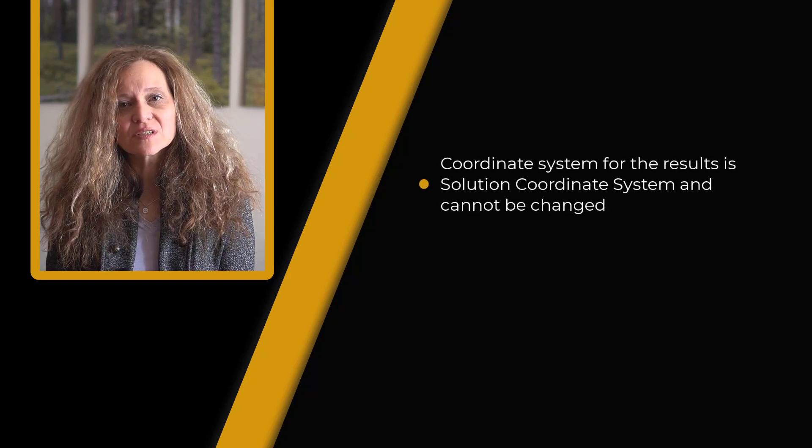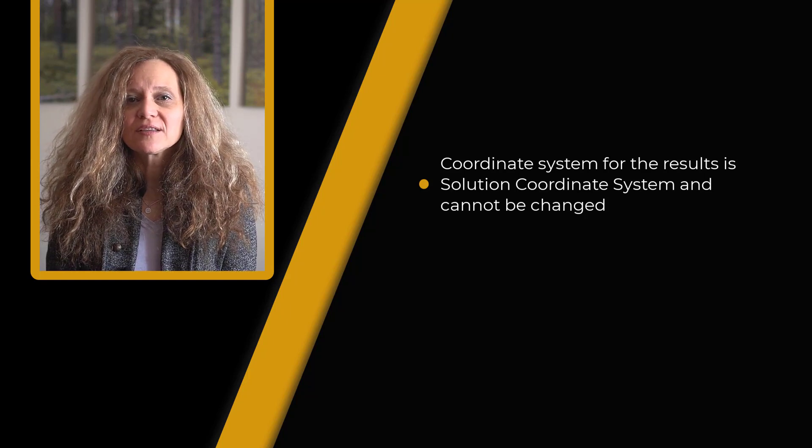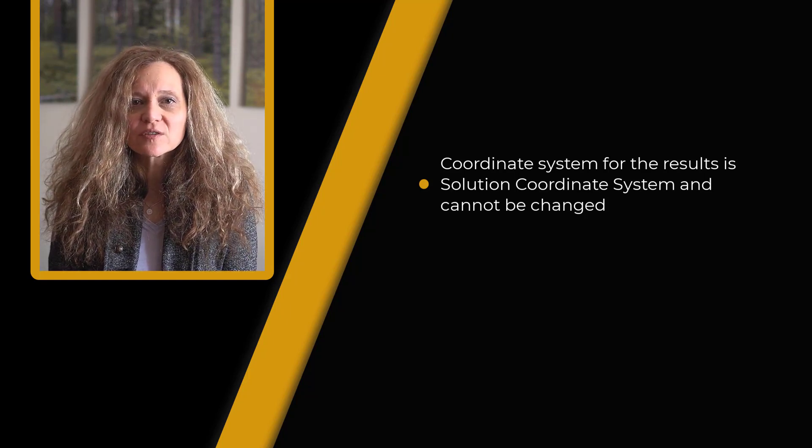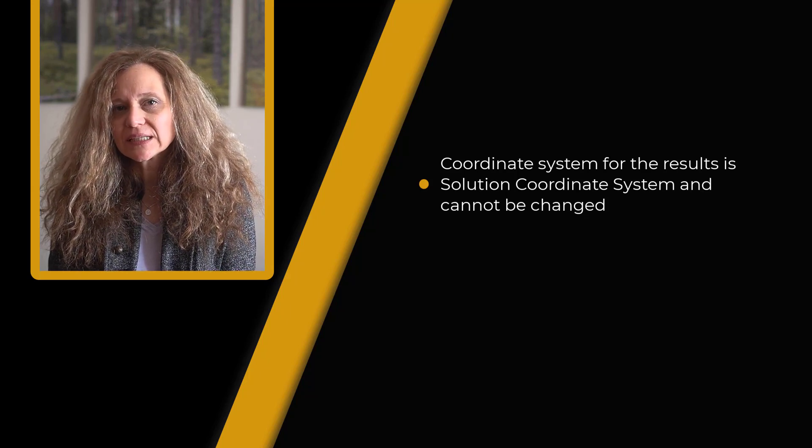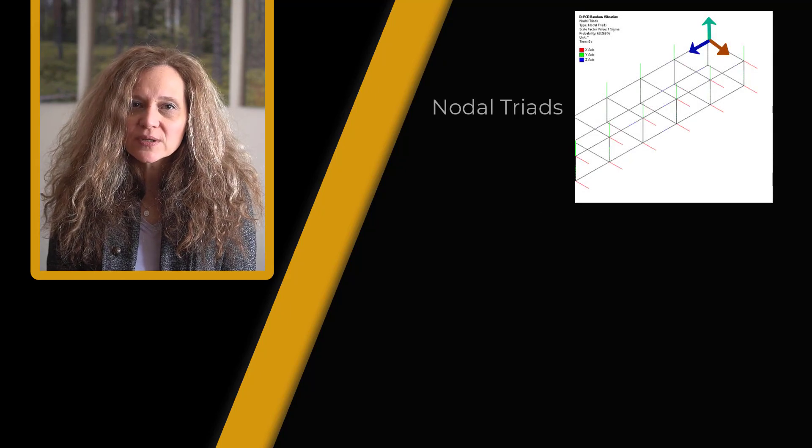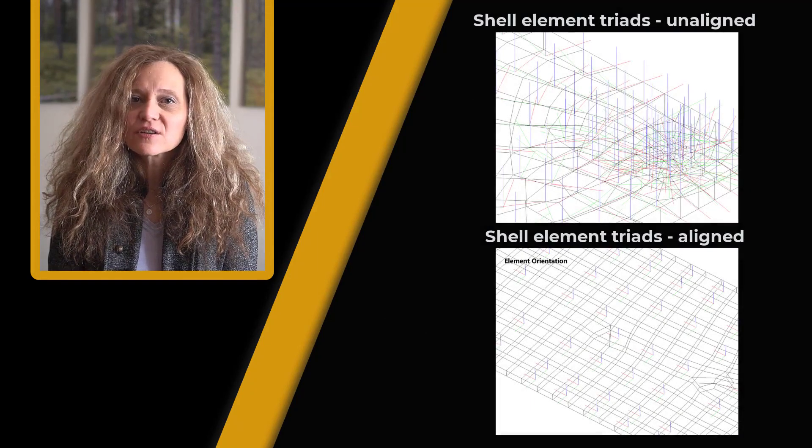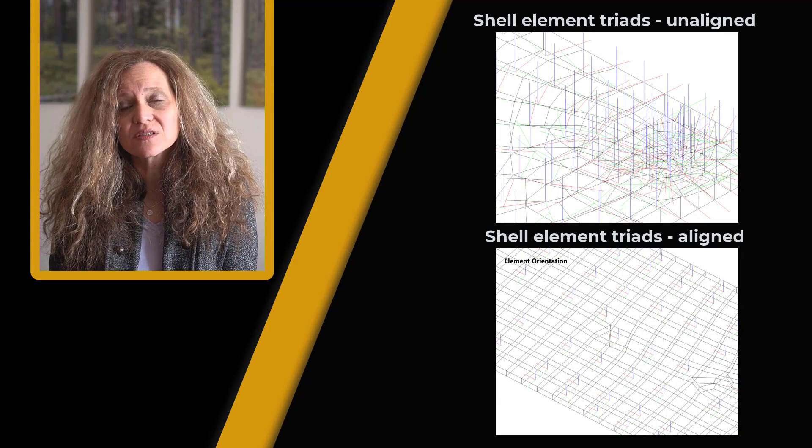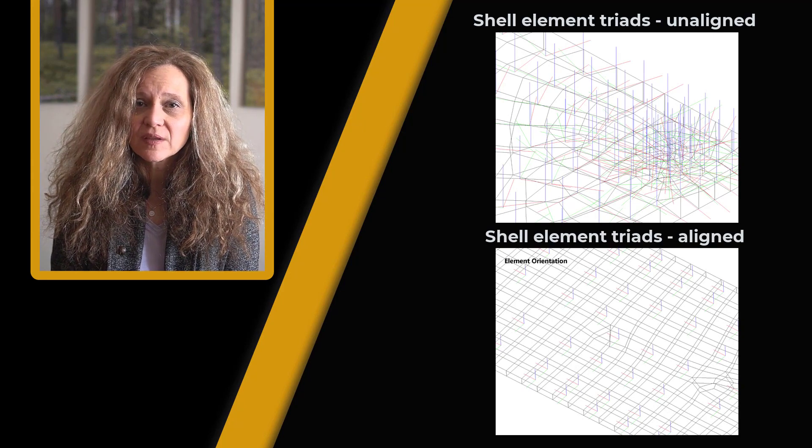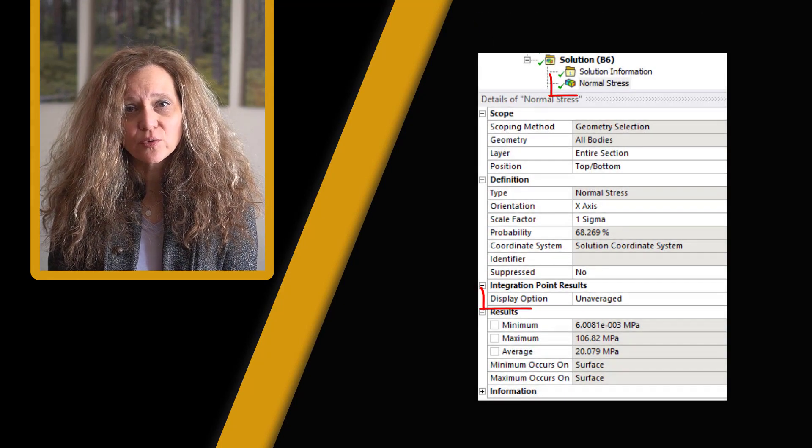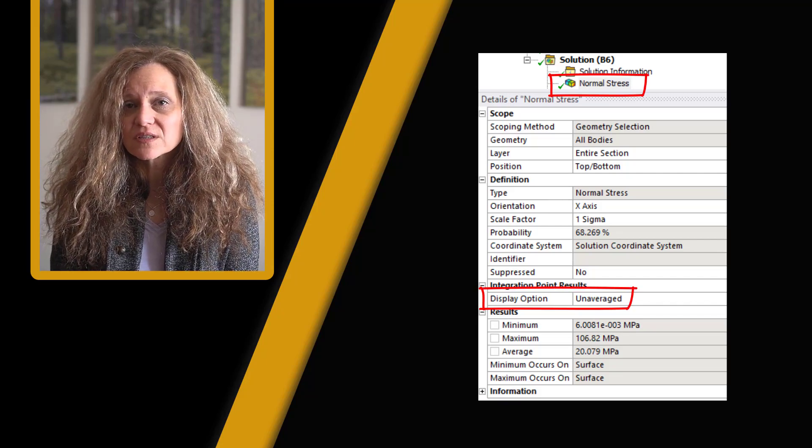When reviewing the random vibration analysis results, it is important to keep in mind that the coordinate system settings for the result object is by default set to solution coordinate system and this cannot be changed because the results only have meaning when viewed in the solution coordinate system. Displacements are always in the solution nodal coordinate system while stresses and strains are in the element coordinate system. The element coordinate system for the shell elements in a surface body may not all be aligned consistently when using the default coordinate system. Consider using averaged results for post-processing of element results, stresses and strains instead.